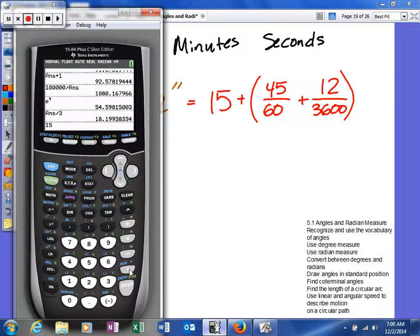So we'll go ahead and say 15 and then plus 45 divided by 60. And then we'll add to that 12 divided by 3,600. So this is going to be the decimal equivalent for that. So you can see what the decimal is.